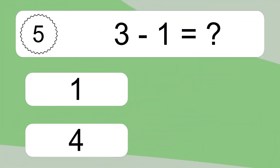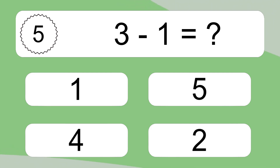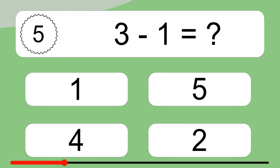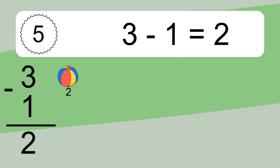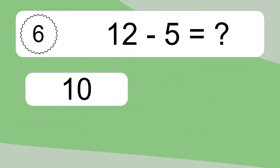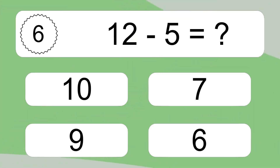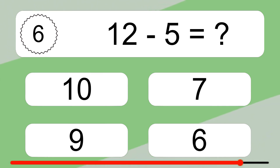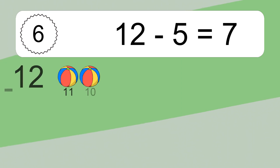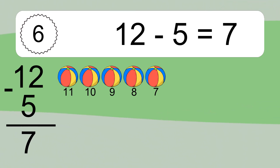3 minus 1 equals what? 3 minus 1 equals 2. 12 minus 5 equals 7. Let's count it: 11, 10, 9, 8, 7.